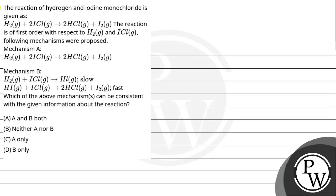Hello, let's read the question. The reaction of hydrogen and iodine monochloride is given as H2 plus 2 ICl gives 2 HCl plus I2. The reaction is of first order with respect to H2 and ICl.